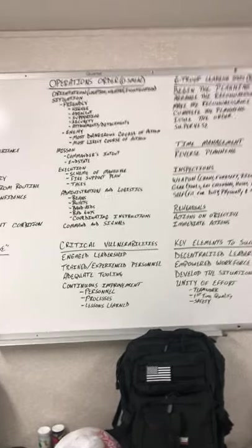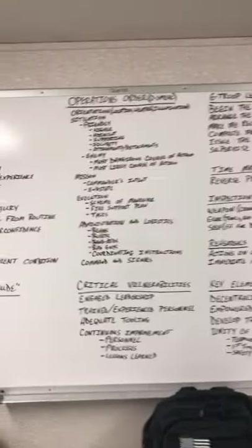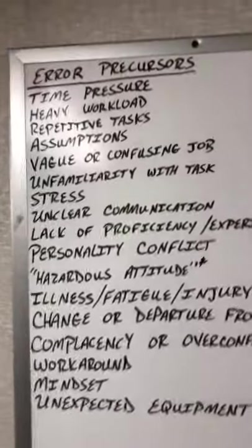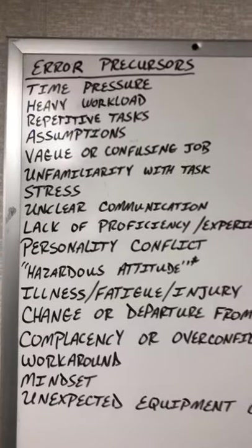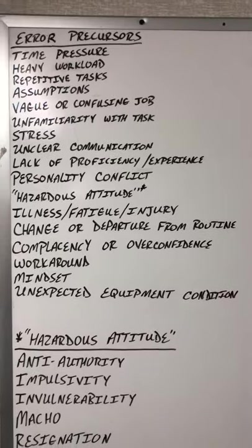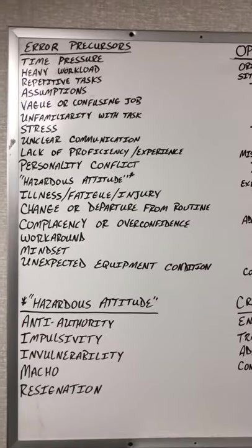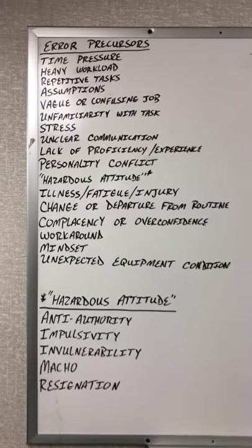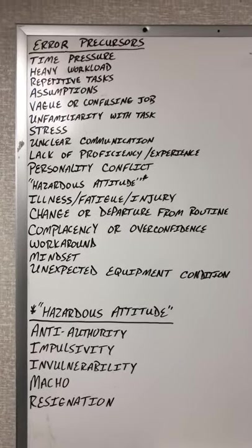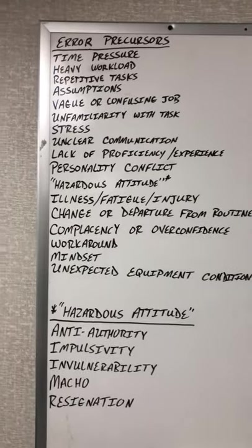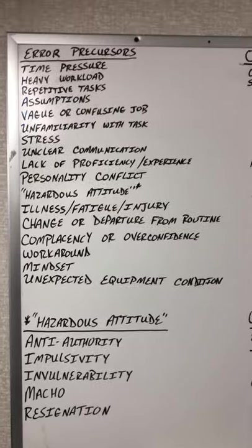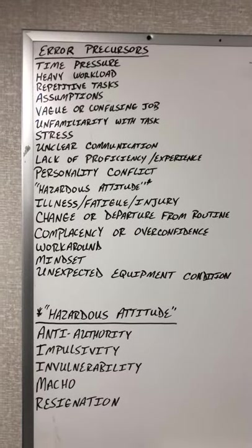Here it is in a nutshell: these are the error precursors in identifying human performance. These are our enemy, and they exist on every job site we work — so it's a continuing issue. We have to have a campaign plan to combat these error precursors, which result in quality issues and safety issues.